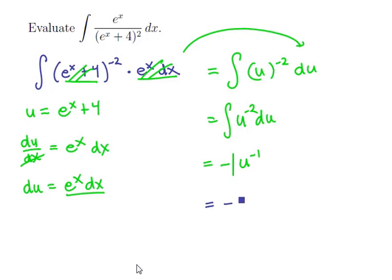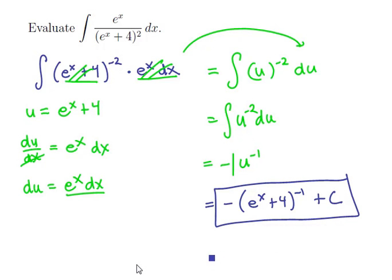And now we can back substitute. This is minus e to the x plus 4, quantity to the minus 1, plus c. And if you feel compelled to simplify that a little bit, you could also write this as negative 1 over e to the x plus 4, plus c. Either one of those is fine.